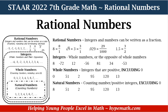And lastly, natural numbers are counting numbers, or positive integers excluding 0. So they're counting numbers: 1, 2, 3, 4, 5, all the way up to infinity. For our examples we have 8, 51, 2, 95, 120, and 13. If you notice between the whole numbers and natural numbers examples, the only difference is we did not add 0, because natural numbers exclude 0.